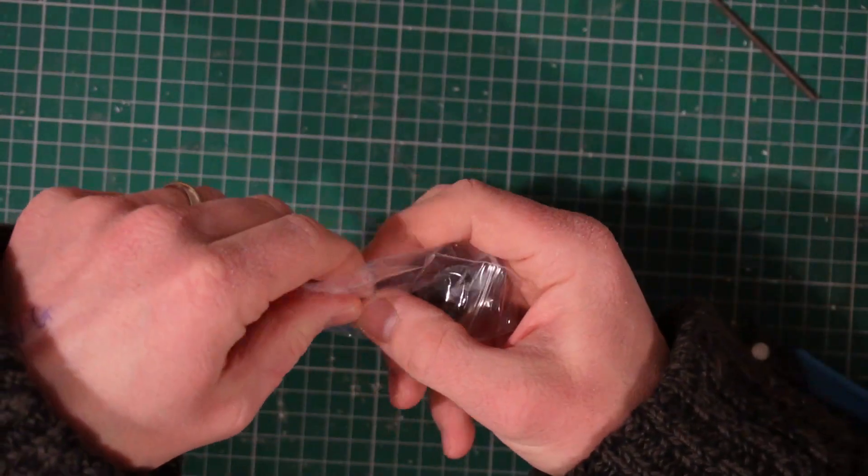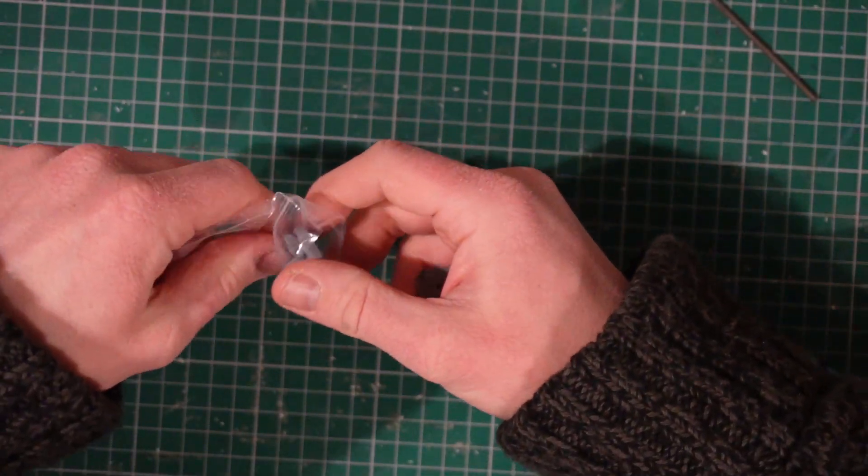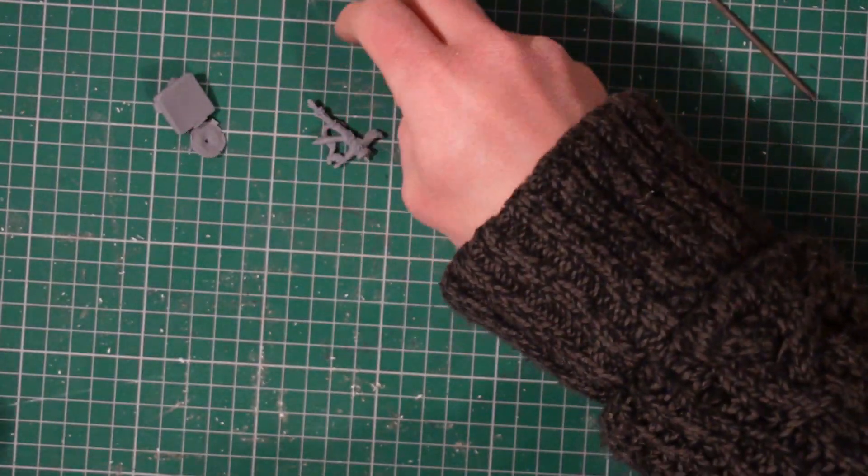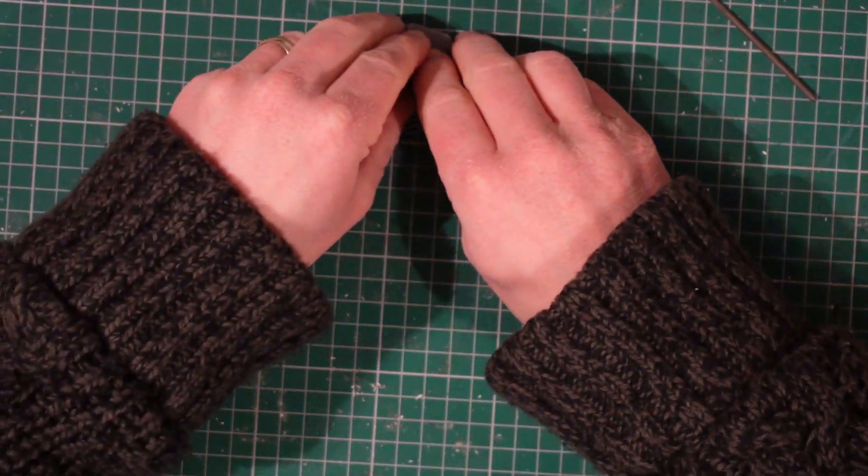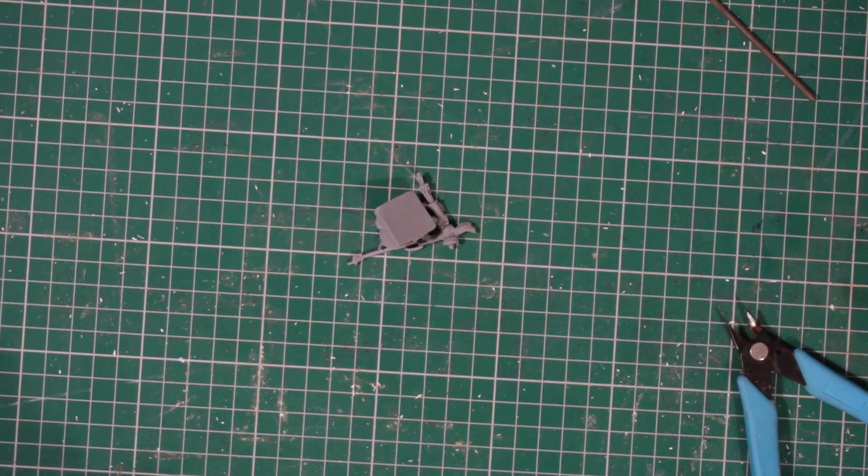Okay, so on to the model itself. Let's get this thing out of the packet. Bit fiddly, dropped all the bits. Right, so you see here we've got four little bits for your model. Hopefully I can zoom this in a bit, okay there we go, right in the middle.